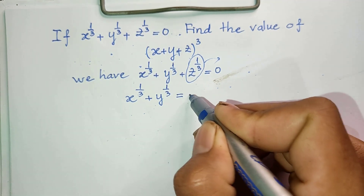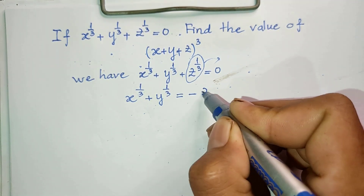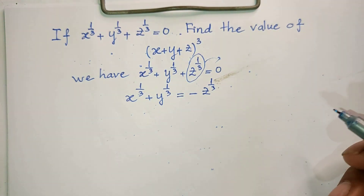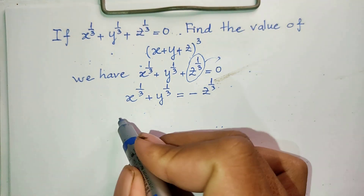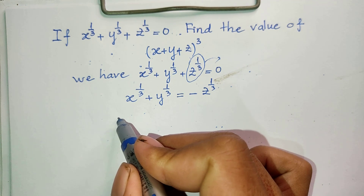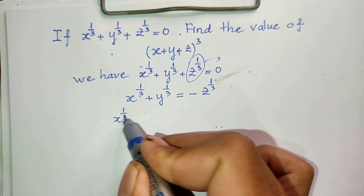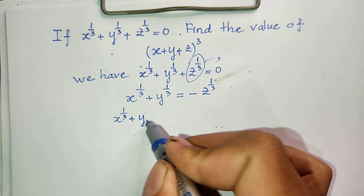Now I will raise both sides of this equation to the power 3. So I get: x to the power 1/3 plus y to the power 1/3, all to the power 3, is equal to minus z to the power 1/3, all to the power 3.